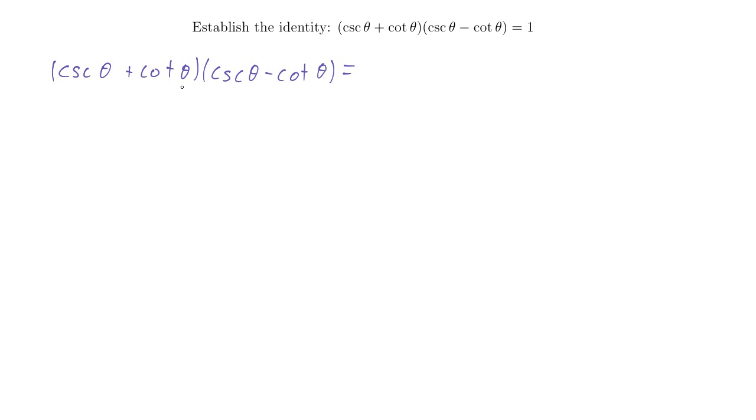Well, again, here we're multiplying something by something else. So let's do that multiplication. Let's distribute this, or if you're fond of it, you could FOIL. And if you do that, you do cosecant theta times cosecant theta. That will be cosecant squared theta. The last parts will be cotangent of theta times negative cotangent of theta. So that will give us a negative cotangent squared theta.